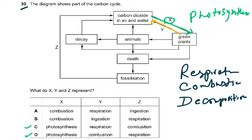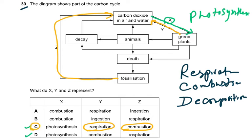Z represents fossilization to carbon dioxide in the air, which means fossil fuels are burned in cars and aeroplanes and carbon dioxide is returned to the atmosphere — so Z must be combustion. That is why the answer had to be C.